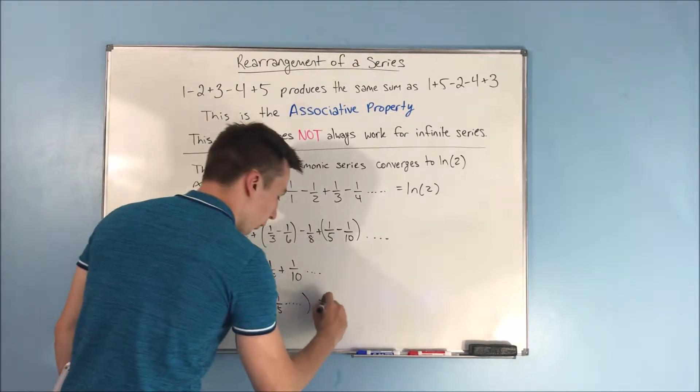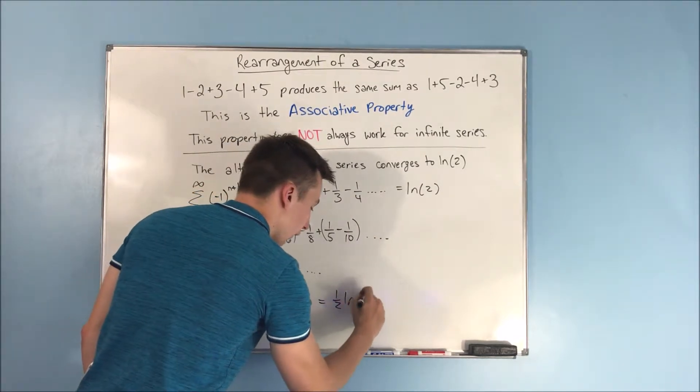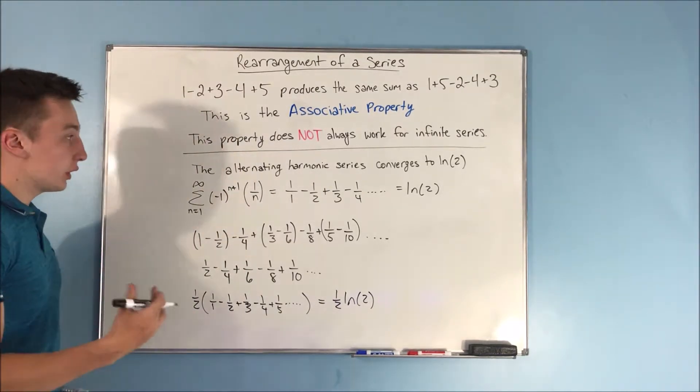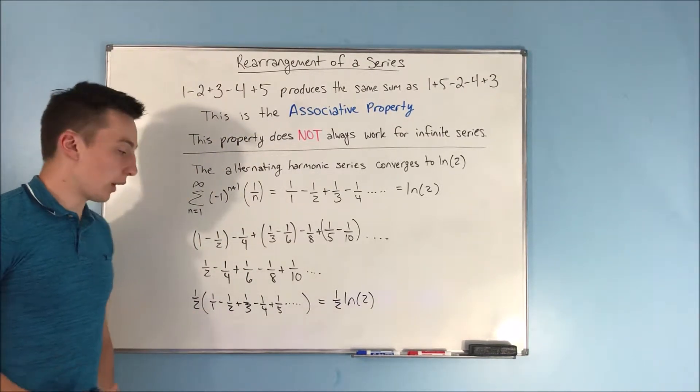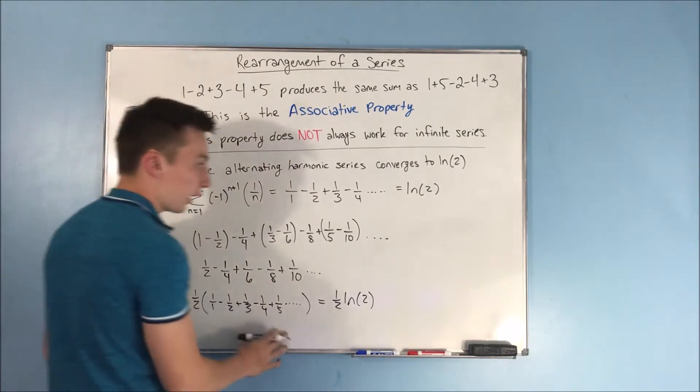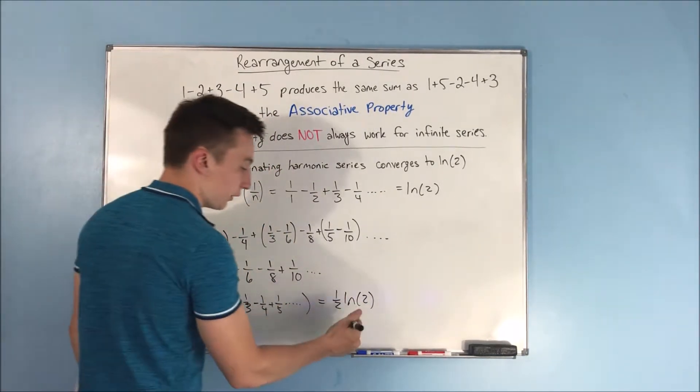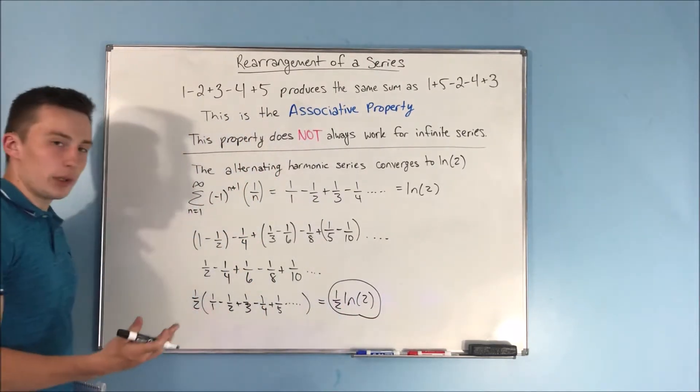And what that's going to equal is 1 half natural log of 2 because it's 1 half the sum of the alternating harmonic series. We know the sum of the alternating harmonic series is natural log of 2. So that's where you get the 1 half natural log of 2 from. And that's really, really weird.